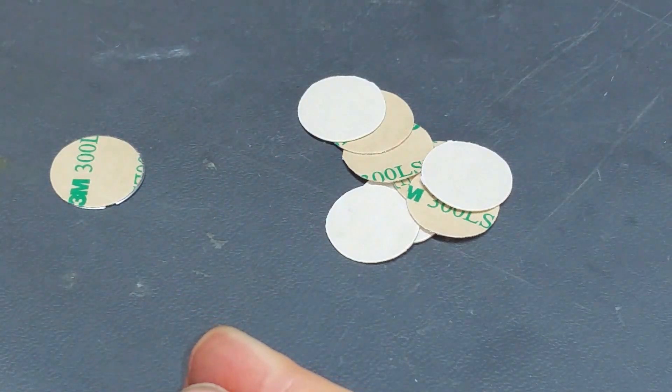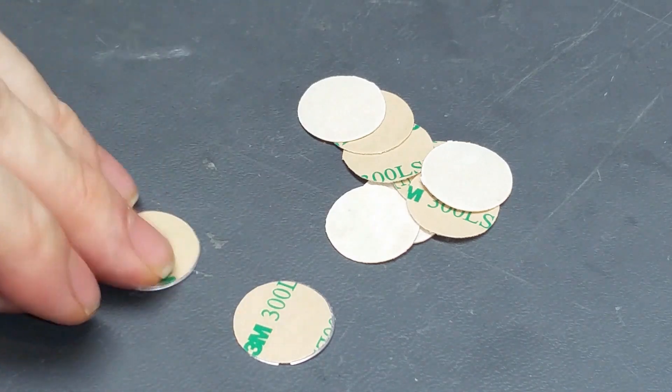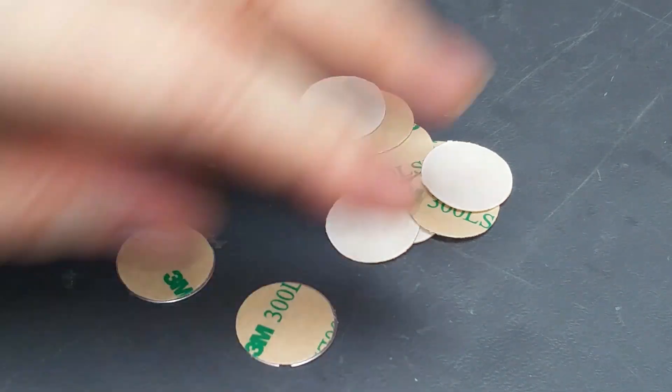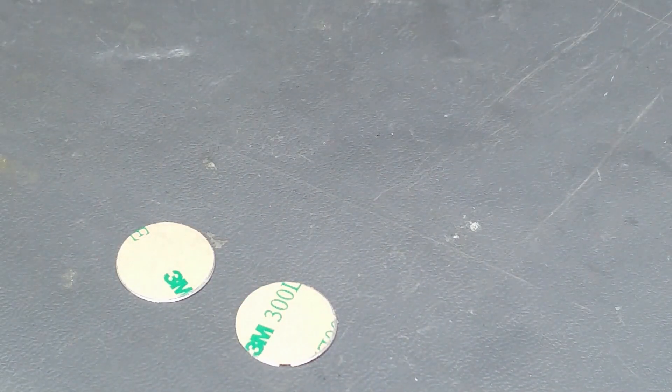So now we have two dots, two knob caps, two discs, whatever you want to call them, with freshly applied adhesive. And we actually have some leftovers here that I can save for the next time. We'll put those on the scope now.